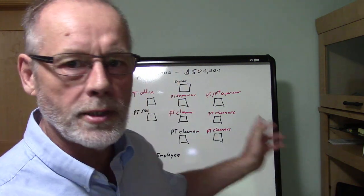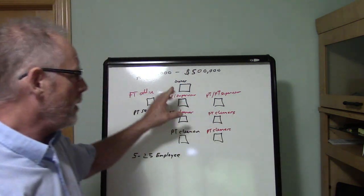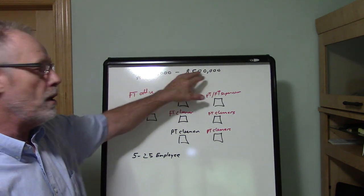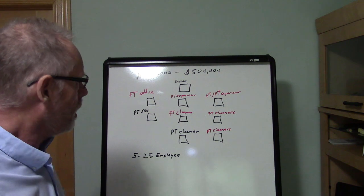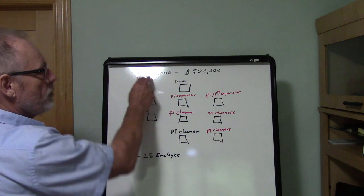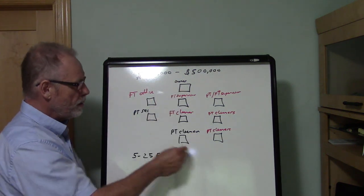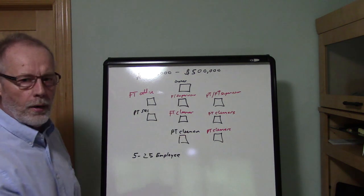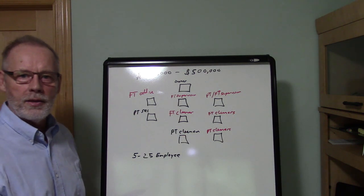For example, in my chart behind me here, this chart is for a company that is doing $250,000 in revenue and they're going to scale to $500,000. When we're at $250,000, typically you have the owner and some part-time cleaners. Now you have to remember, an organizational chart is exactly that - it's just a chart, something that you can go by. You can run as lean or as heavy as you want with positions, so keep that in mind.